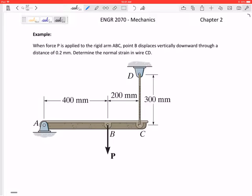Let's look at this example. When a force P is applied to the rigid arm ABC, point B displaces vertically downward a distance of 0.2 millimeters. So this point B goes down just a little bit.